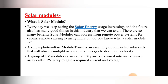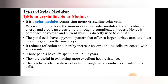A group of PV modules is also called a PV panel, and these are wired into an extensive array called a PV array, to gain the required current and voltage. There are three main types of solar modules: the first one is the monocrystalline solar module, the second is polycrystalline, and the third is the thin film solar module.